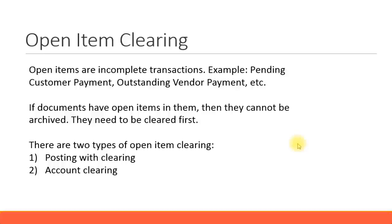If documents have open items in them, they cannot be archived — which means they need to be cleared first. Archiving means, for example, you have documents which are two to three years old, and if you do not need access to them because you have already closed the financial books, then you can archive those documents. Archiving is similar to zipping a folder.